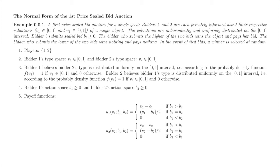The uniform distribution on 0-1 means that all numbers in the 0-1 interval are equally likely. A bid is an action. Any non-negative bid is permissible. Finally, we come to the payoff functions. If a bidder wins the auction, her payoff is her type less her bid. If she loses, her payoff is 0. Winning depends on her own bid, the other bidder's bid, and her own type.